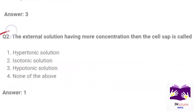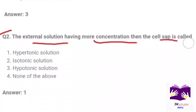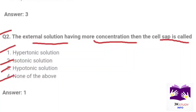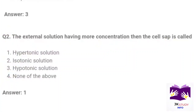Next question: The external solution having more concentration than the cell sap is called? Option 1: hypertonic solution. Option 2: isotonic solution. Option 3: hypotonic solution. Correct option: hypertonic solution. Next question: The external solution having less concentration than the cell sap is called? Option 1: hypertonic solution. Option 2: isotonic solution. Option 3: hypotonic solution. Option 4: ultratonic solution. Correct option is Part 3: hypotonic solution.